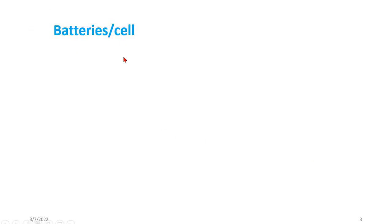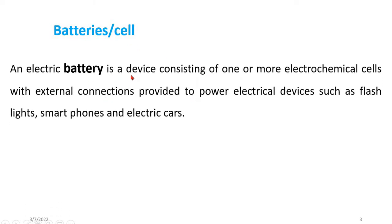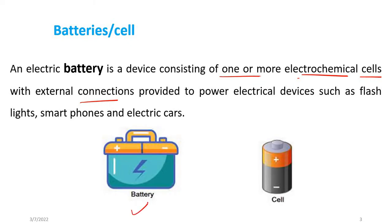As we know, a battery is a set of different cells which are joined in a particular series, but a cell is a single entity which provides the electric current. An electric battery is a device consisting of one or more electrochemical cells, which are externally connected to provide power to electrical devices such as flashlights, smartphones and electric cars. Both battery and cell have the same function — to provide electric current to electrical devices.